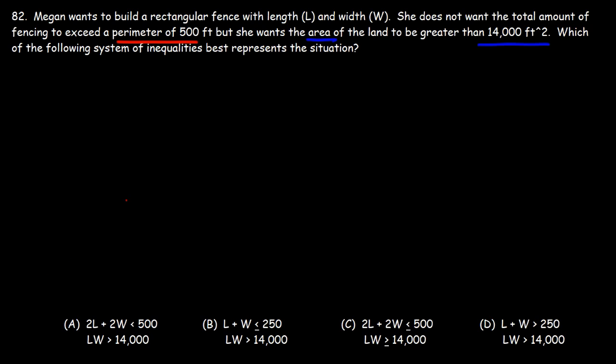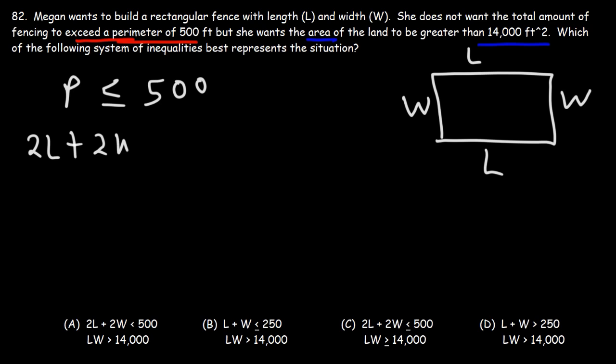So let's start with the perimeter. She doesn't want the perimeter to exceed 500 feet, so the perimeter has to be less than or equal to 500 feet. We have a rectangle with length L and width W. The perimeter of a rectangle is 2L plus 2W. So right now, we can eliminate answer choice A because it's less than 500, not less than or equal to 500.